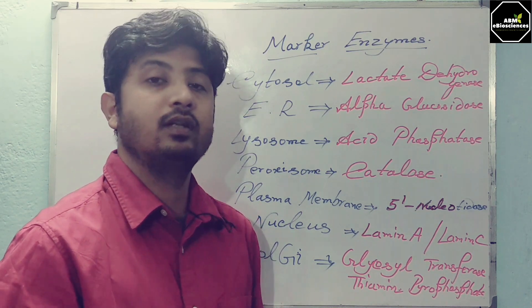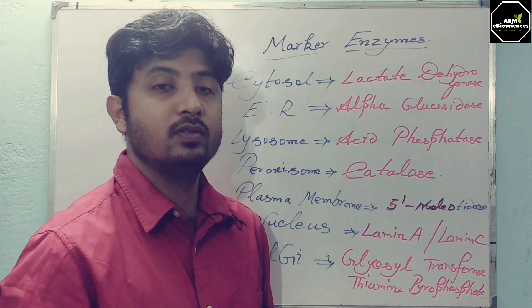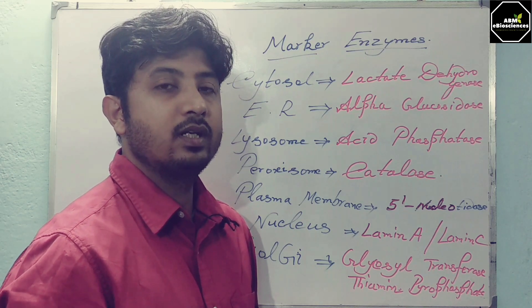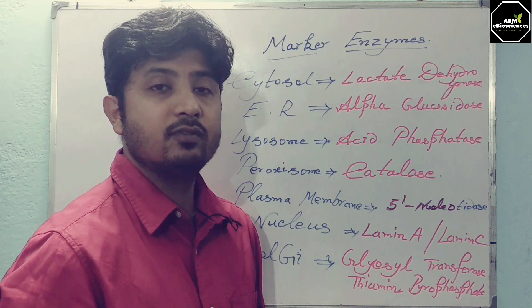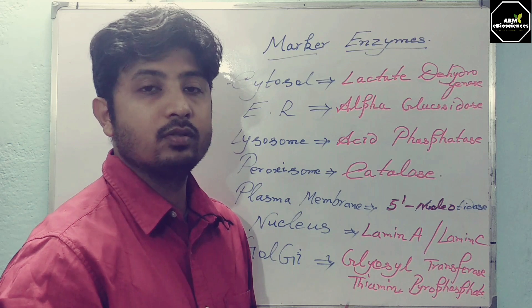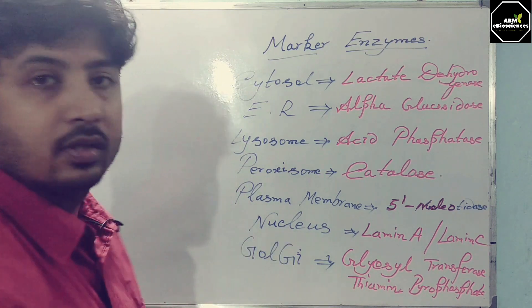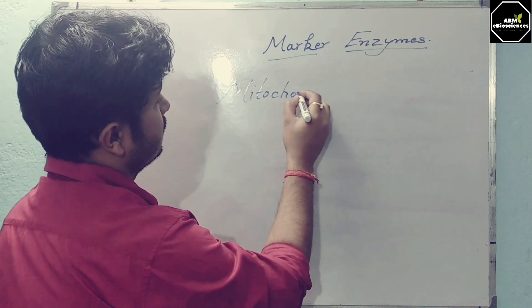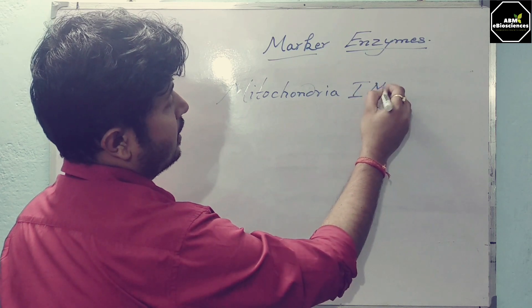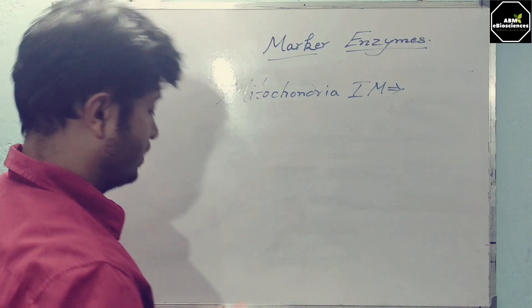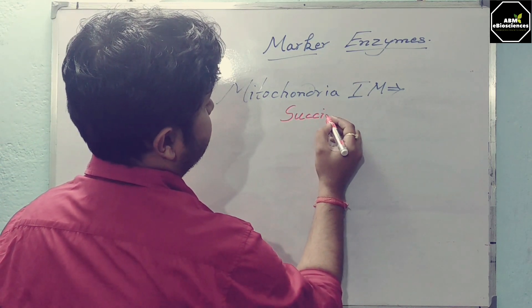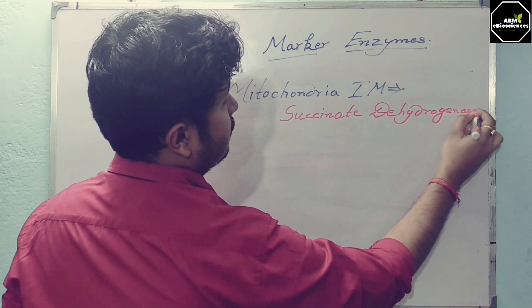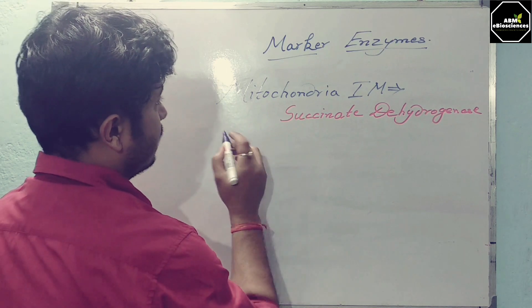Last but not least is the mitochondria, which is a very important part of the cell. There are two to three enzymes that will confirm mitochondria isolation. Note that organelles can be isolated by density gradient centrifugation and ultracentrifugation at different densities. For the mitochondrial inner membrane, you can use succinate dehydrogenase as the marker enzyme.